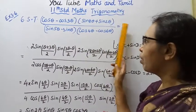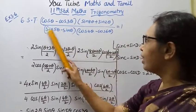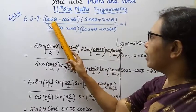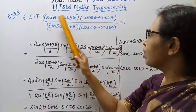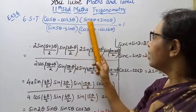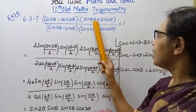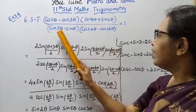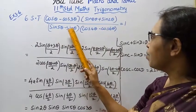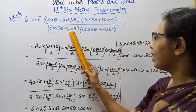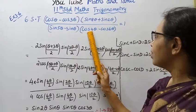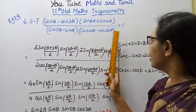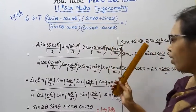We prove the left hand side. We apply the formulas: cos C minus cos D, sin C plus sin D, sin C minus sin D, and cos C minus cos D. You need the formula's law.